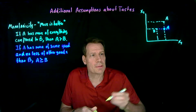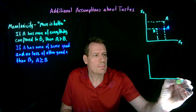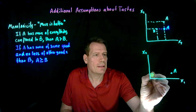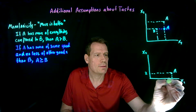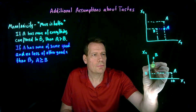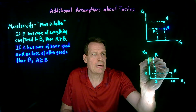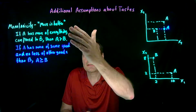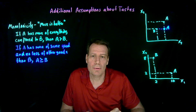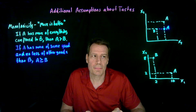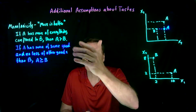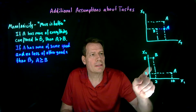The second assumption deals with a slightly different scenario. Suppose we have two bundles: bundle A with two units of x2 and ten units of x1, and bundle B with two units of x1 and eight units of x2. The monotonicity assumption tells us nothing about how you might rank those bundles, because it only applies where one bundle has more of everything, or more of some things and no less of everything else. Here, bundle A has more of x1 but less of x2, and bundle B has more of x2 but less of x1, so monotonicity doesn't apply.